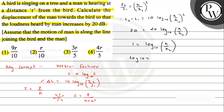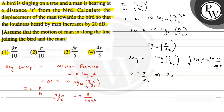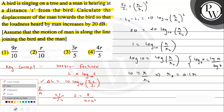From here, log base 10 of 10 equals log of (r/r2). Using log properties, we take the antilog on both sides: 10 = r/r2. So the value of r2 comes out to be r/10.